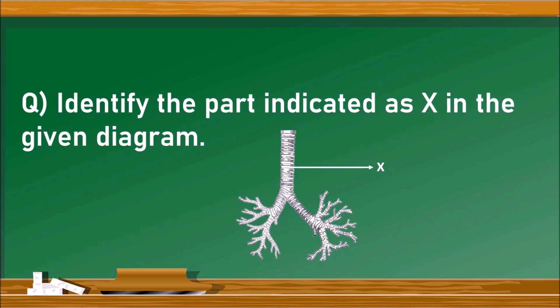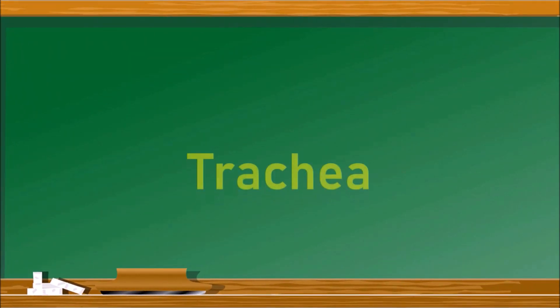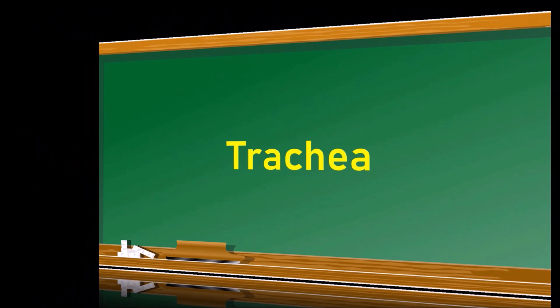Identify the part indicated as X in the given diagram of the respiratory system. The part identified is the trachea.